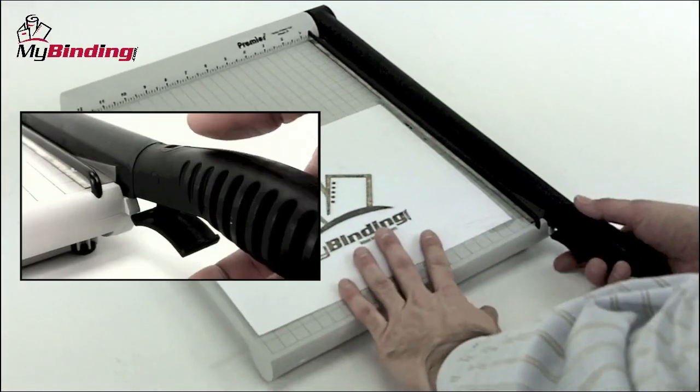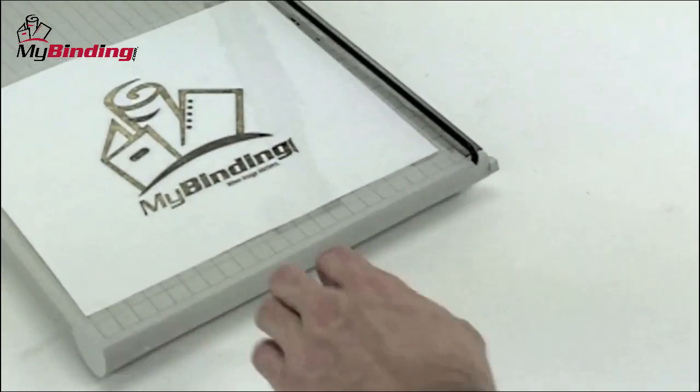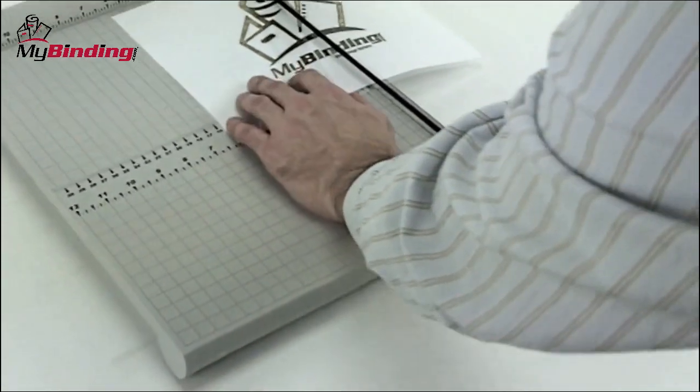Polyboard makes for a very lightweight guillotine cutter. Just below the handle is the safety release lever, and the motion of the self-sharpening blade is smooth.